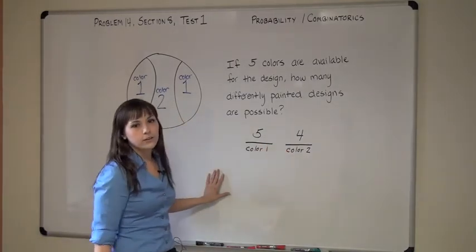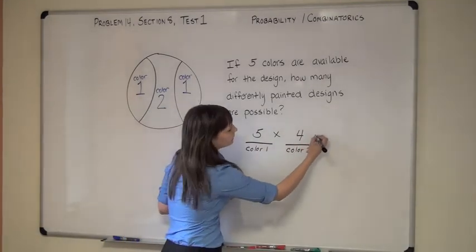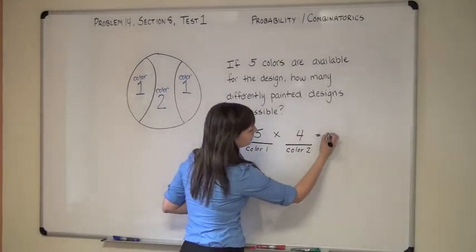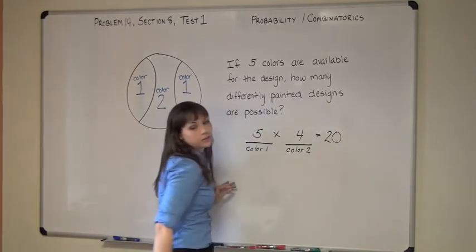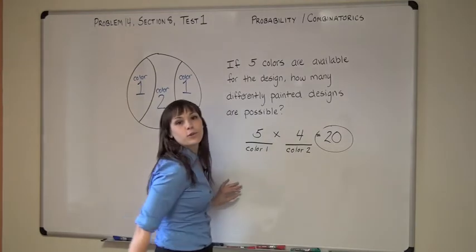Because order does matter, we have a permutation, and you can just multiply across. Five times four equals twenty. So the correct answer to the problem is B, twenty possibilities.